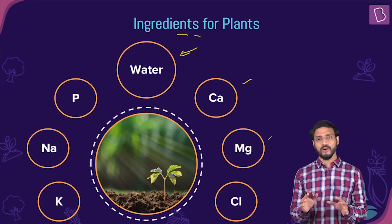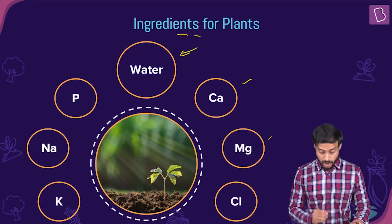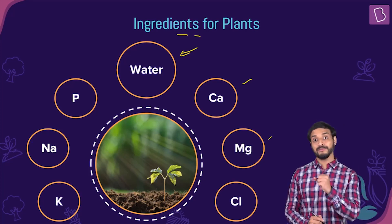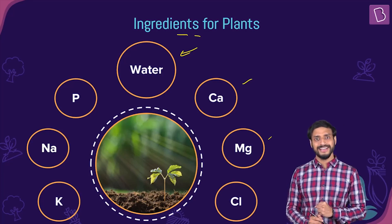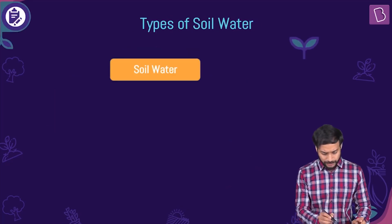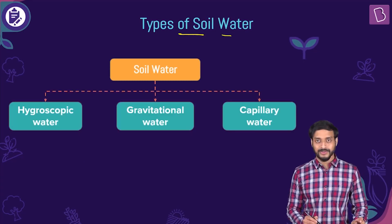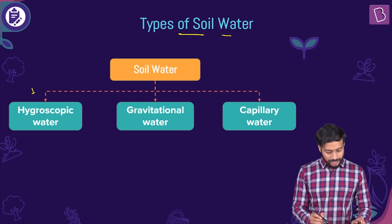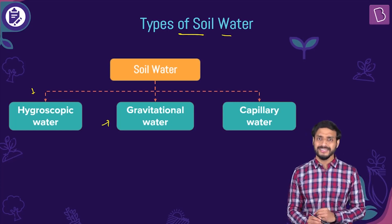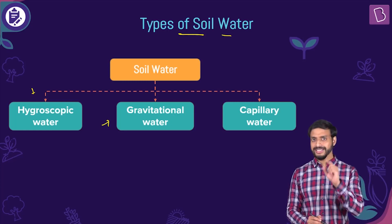Water is absolutely essential for us and for plants. Now, if I tell you there are many types of soil water — does that sound weird? Yes, many types of soil water. Let's talk about it: the types of soil water. We have hygroscopic water, gravitational water, and capillary water.